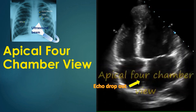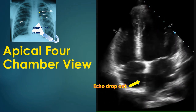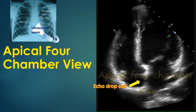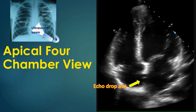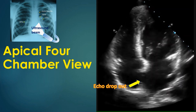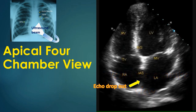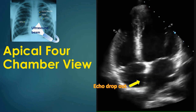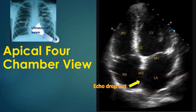Dropouts in the inter-atrial septum are common in this view without any true atrial septal defect. This is because the ultrasound beam is parallel to the inter-atrial septum and the thin region at the fossa ovalis is often seen as an echo dropout. A subcostal view should be obtained to image the inter-atrial septum before concluding that the dropout is an atrial septal defect. A good left-to-right flow demonstrated by color Doppler can also be used to confirm the presence of an atrial septal defect, especially if the subcostal view is suboptimal as in some adults.